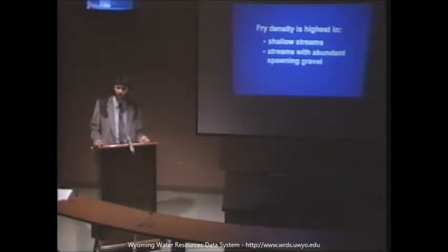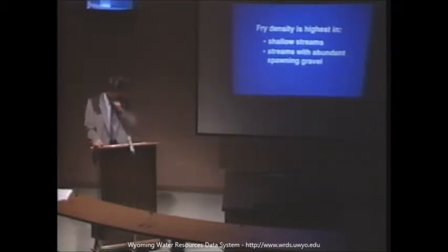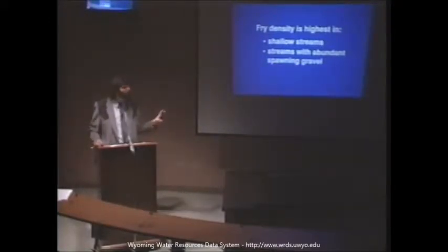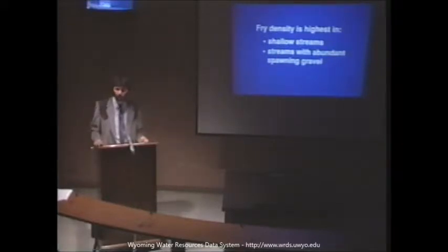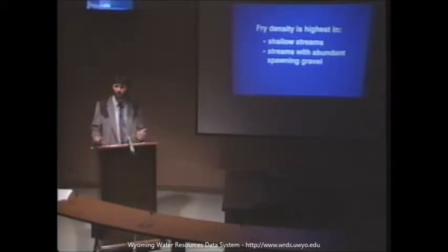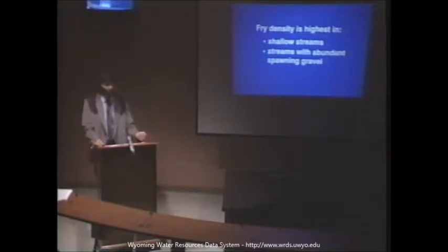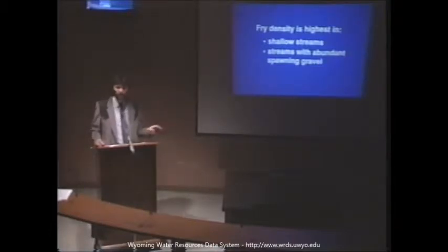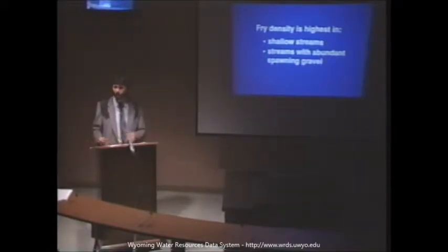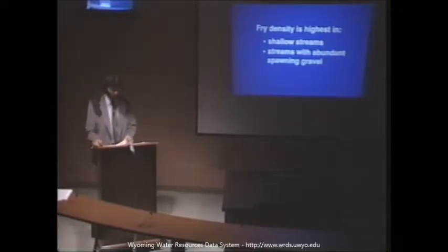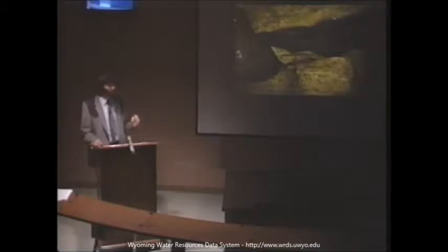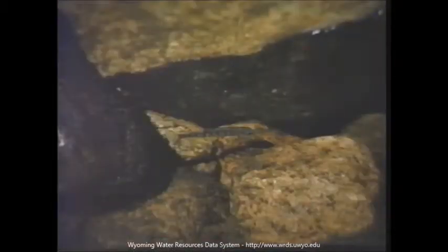Of what importance is this information? It's important in an applied sense for mitigation efforts where there may be some impact to some reaches of stream. If we can identify critical areas and fry are the critical life stage, we can mitigate around these areas and protect them. The problem is, if there is an impact on a stream, this type of analysis doesn't do anything for us in terms of predicting how changes in stream flow affect the cutthroat trout fry. So this led to the next part of the study, where we wanted to look at the specific relationship between fry and environmental variables to ultimately predict impacts based on different flow regimes.